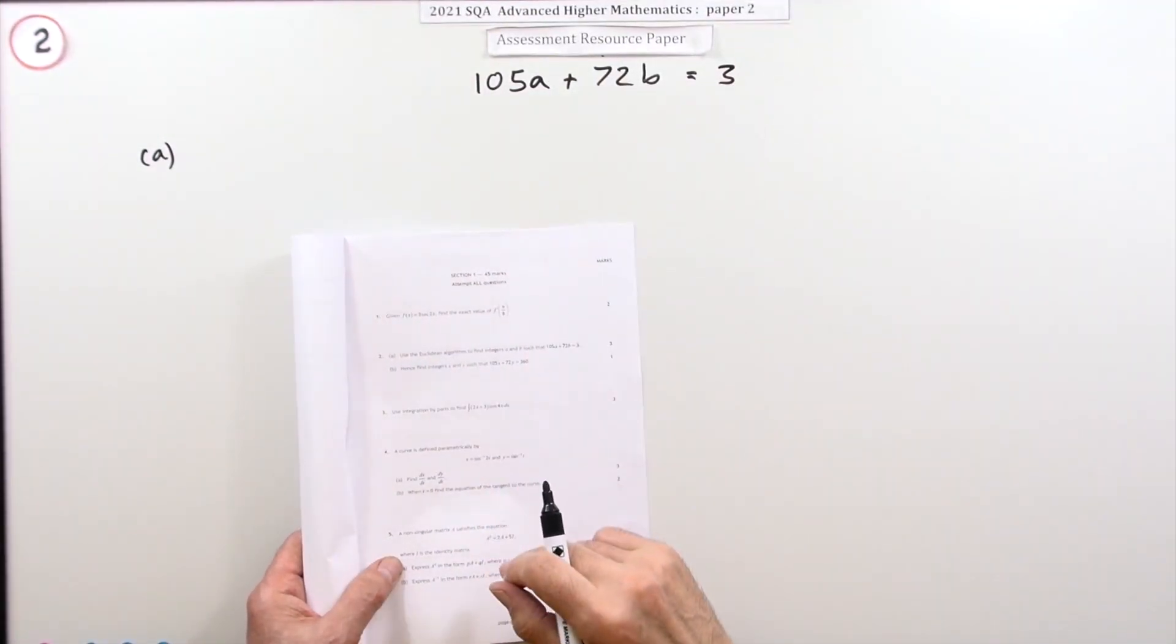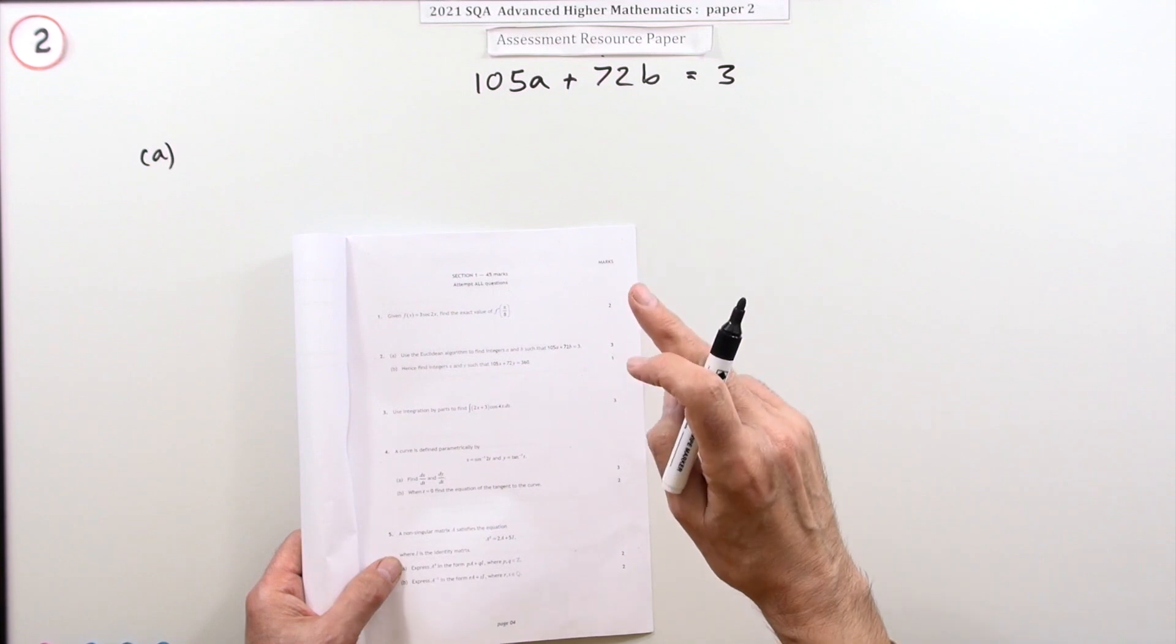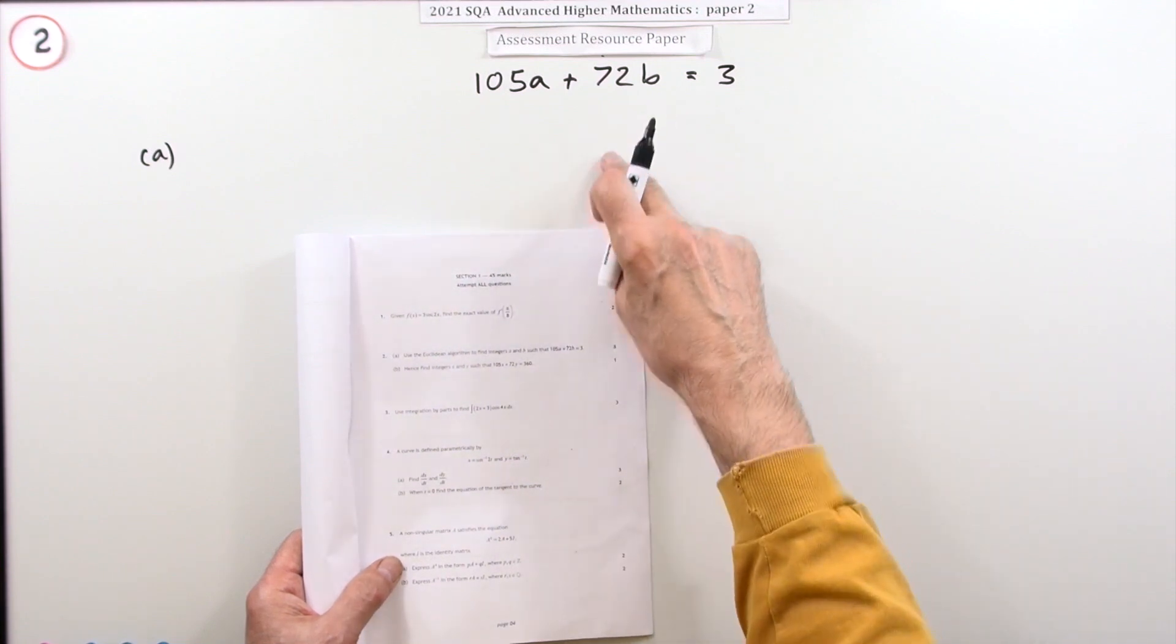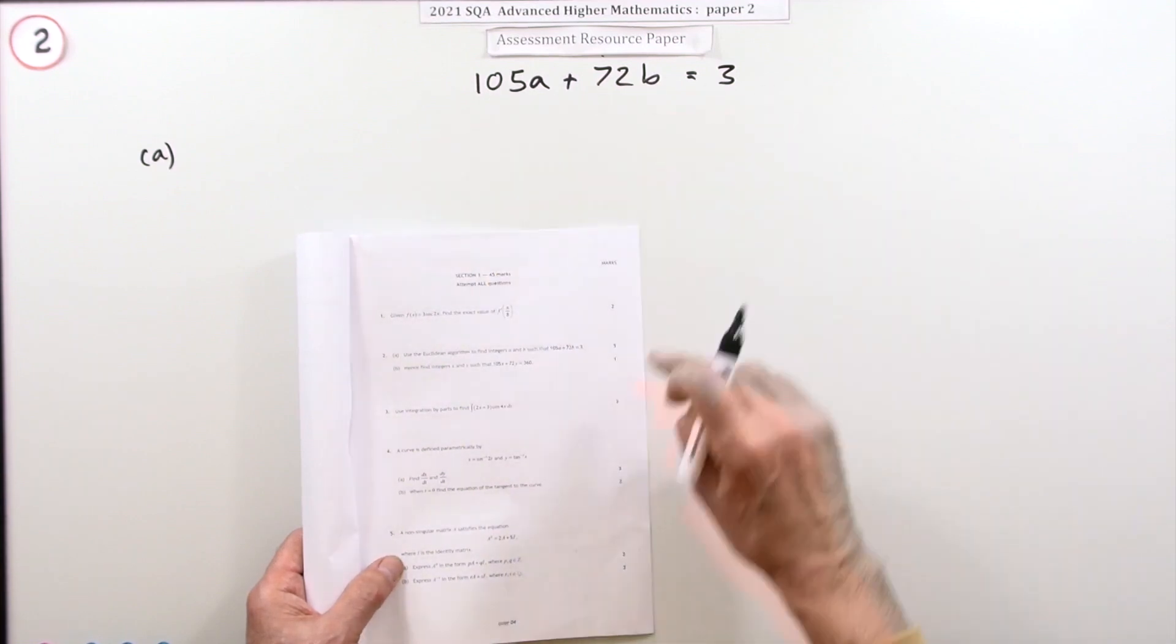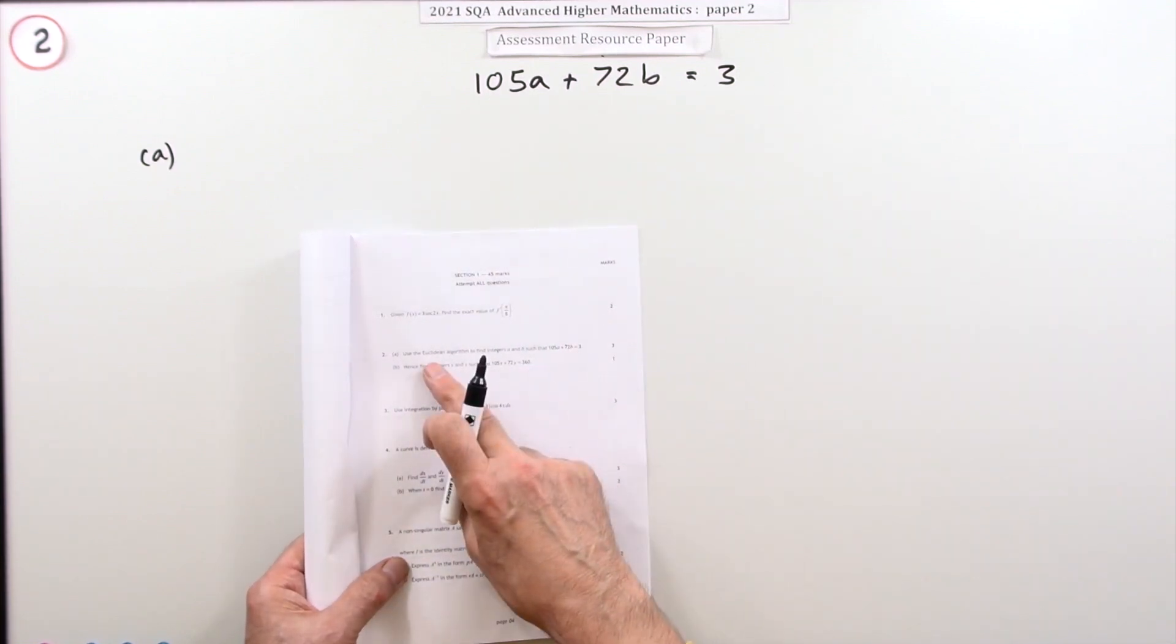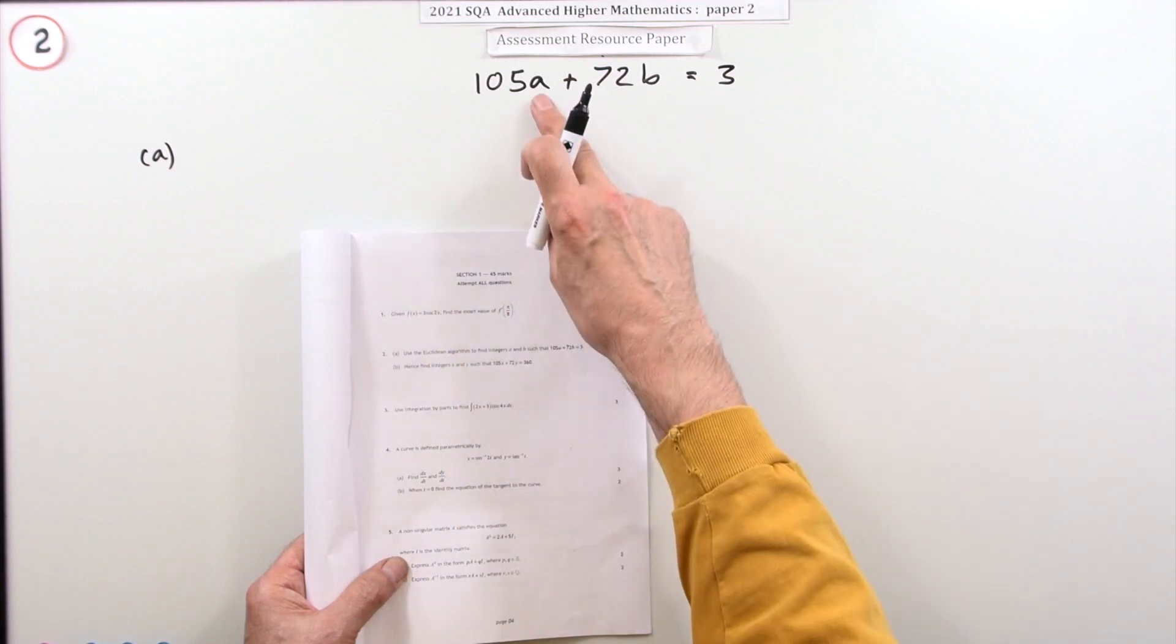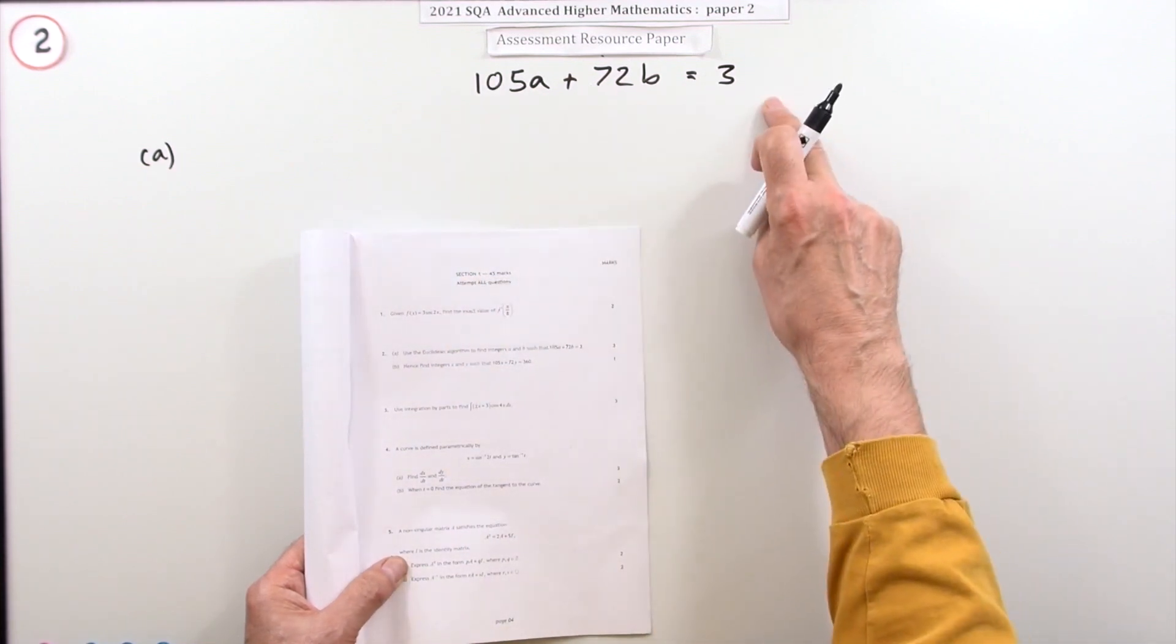Question two from paper two of the 2021 Higher Math Resource Paper. Four marks for using the Euclidean algorithm to solve this Diophantine equation. You have to use the Euclidean algorithm to find integers A and B that satisfy this.